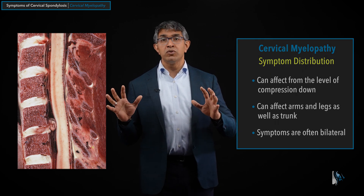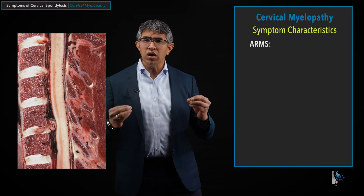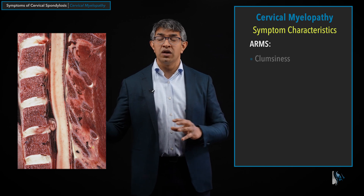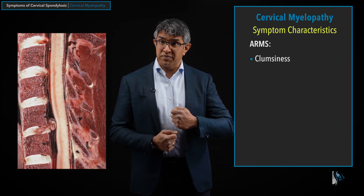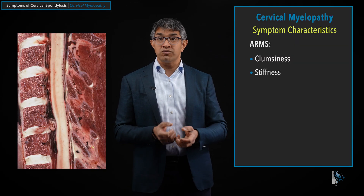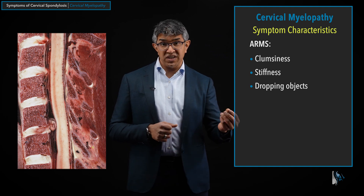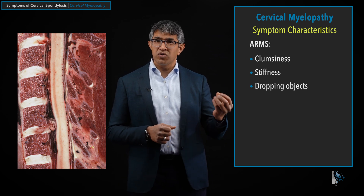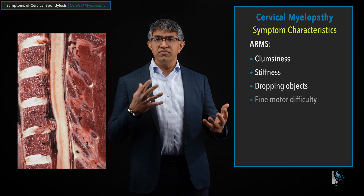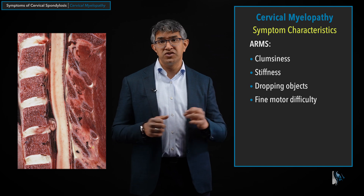In the arms, the symptoms with myelopathy are problems with clumsiness — difficulty with things like buttoning a shirt, zipping up zippers, putting on jewelry. People notice a loss of dexterity. Most patients chalk it up to age, but it's more rapidly progressive than aging alone. There's also stiffness in the fingers affecting typing, using a phone, or playing an instrument. People often notice they're dropping objects — a coffee cup, a sheet of paper that slips right out of their fingers. These fine motor dysfunctions are the classic features of cervical myelopathy in the arms.